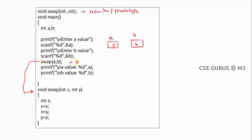In the function declaration, you need to provide the return data type, function name, and the data types of the arguments. This is the function call. Whenever swap(a, b) is encountered, it directly executes the function definition. Now here you can see swap(a, b): if a is 5 and b is 6, these are called actual parameters — the actual values you have given.